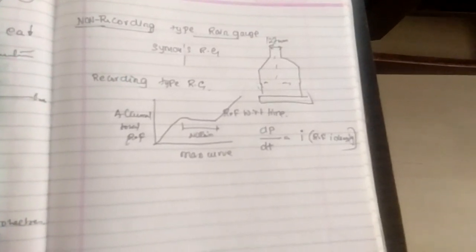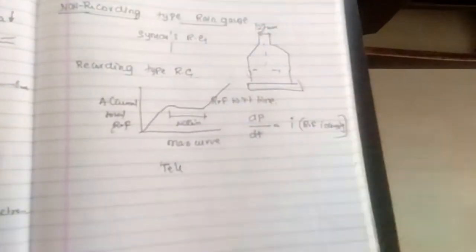Tele-metering type is a recording rain gauge which contains electric units to transfer rainfall data to a base station. This type can be used for remote and inaccessible locations.